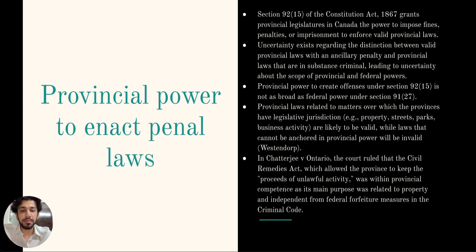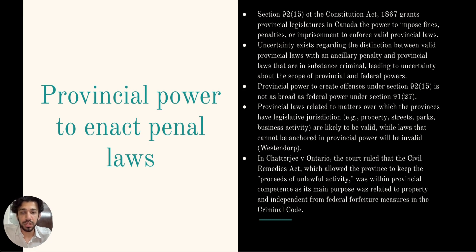The provincial powers to enact penal laws — this power grants provincial legislatures the authority to impose fines, penalties, and imprisonment for enforcing valid provincial laws. Under Section 92(15) of the Constitution Act, provincial legislatures in Canada possess the power to enact penal laws, meaning they can establish legal measures involving fines, penalties, or imprisonment to enforce their own valid laws. It is important to note that the scope of this power is not as extensive as the federal power to create offences under Section 91(27) — this is an ancillary power.